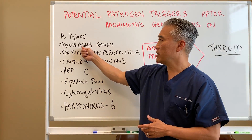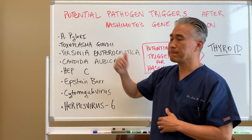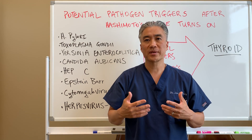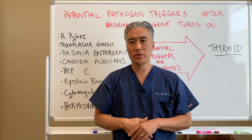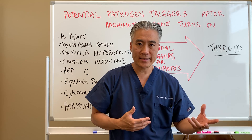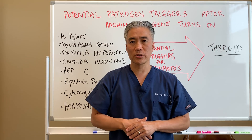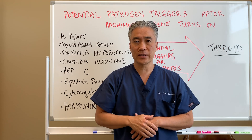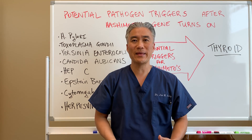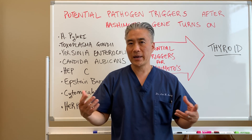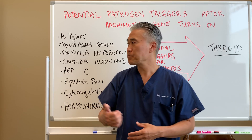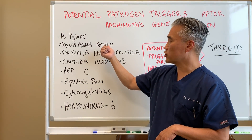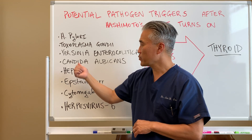Next is Toxoplasma gondii. This is a common infection from cat feces. The domesticated cat, or cats in general, can create this and it could be excreted through the fecal matter. So if you breathe in this stuff or somehow get it into your mouth, you can create an infection and it can create a trigger for Hashimoto's.